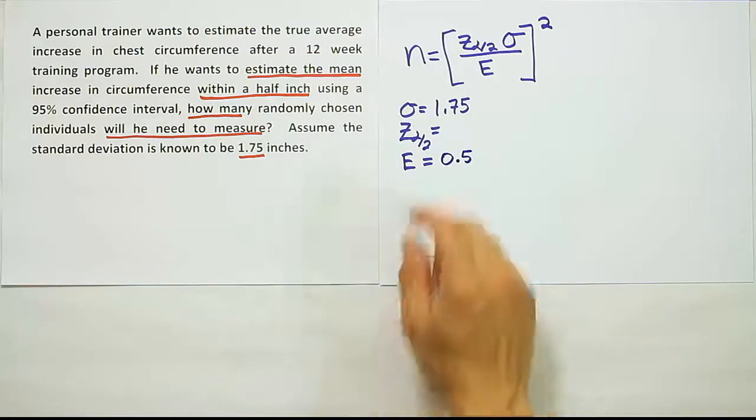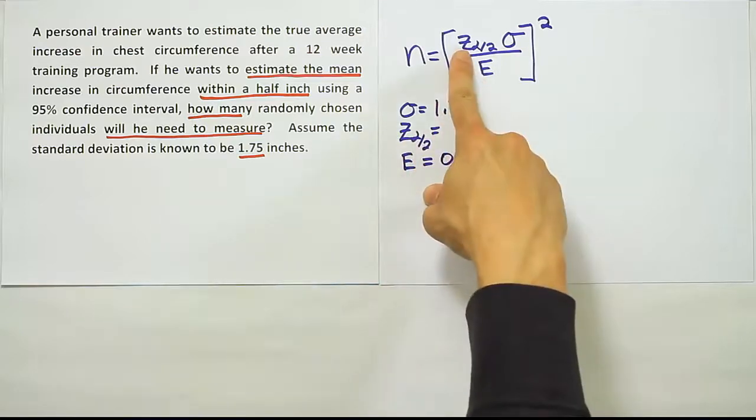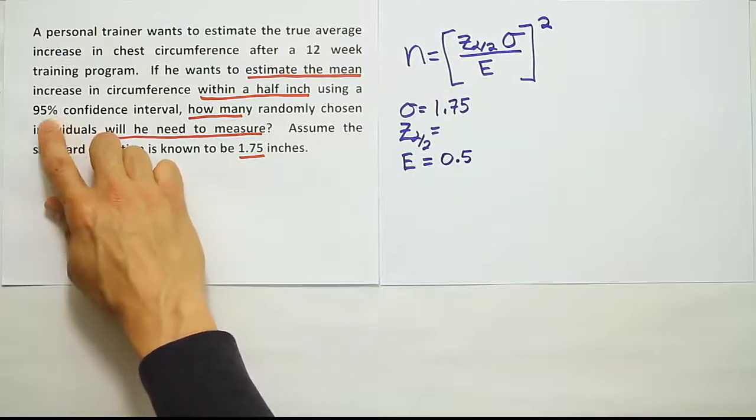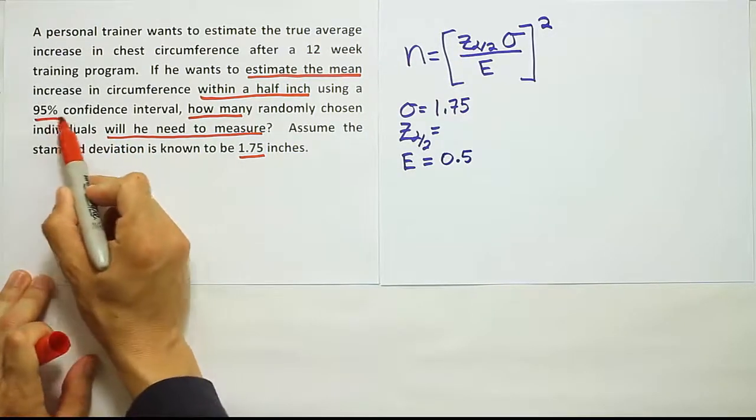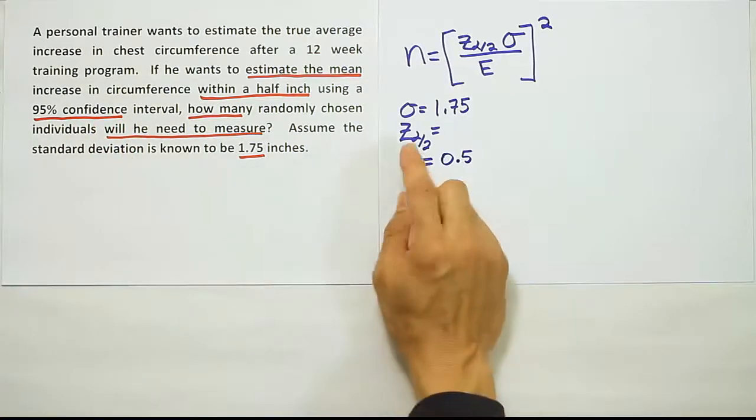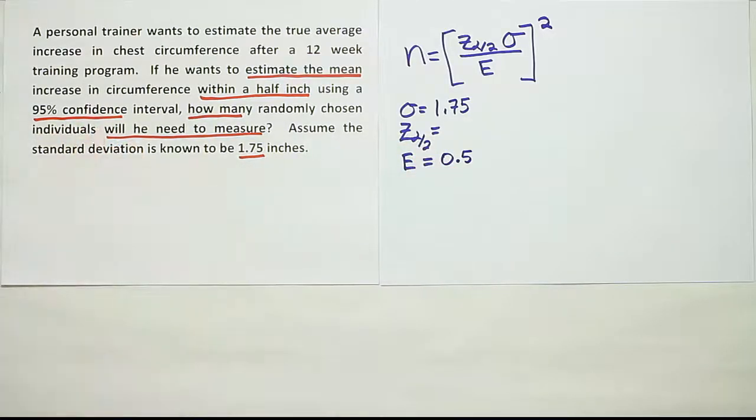Finally, the last thing we need to calculate is this critical z value, the z alpha divided by 2 value. We have to go by the confidence level to figure out that number. It says 95% confidence interval is what we want to create. So the confidence level is 0.95.